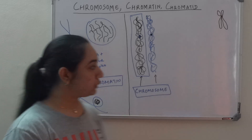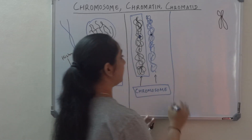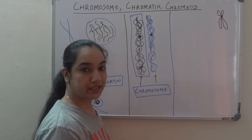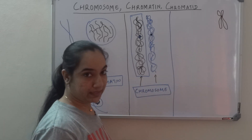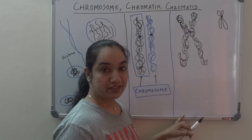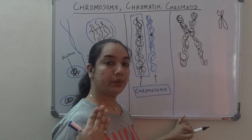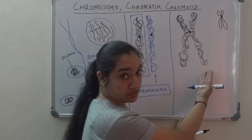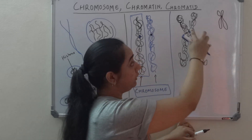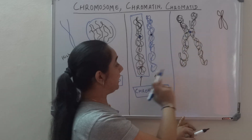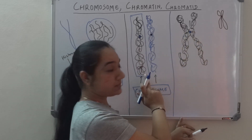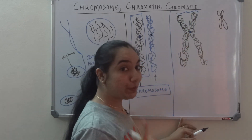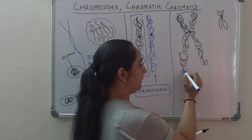When the cell has to divide, each chromosome needs to replicate — each chromosome should make its identical copy. So what will happen is this particular chromosome will make its identical copy, it will duplicate itself. At the time of cell division, the DNA is undergoing replication, and each chromosome will make its identical copy which is initially attached at the point of the centromere.